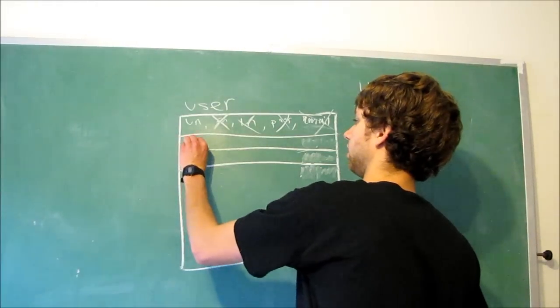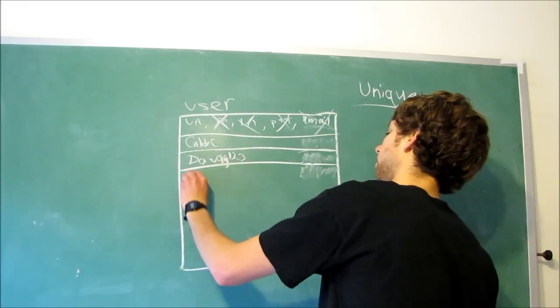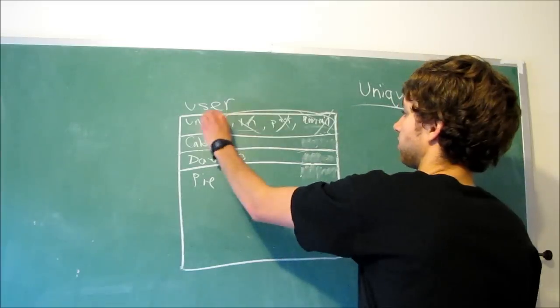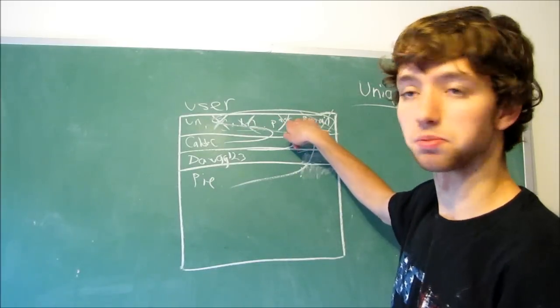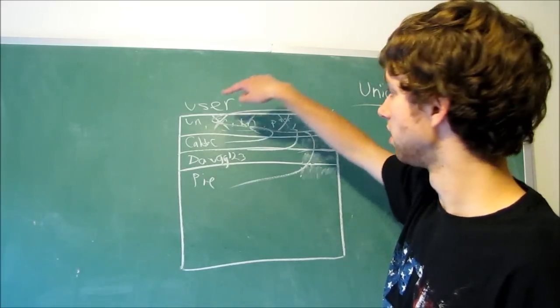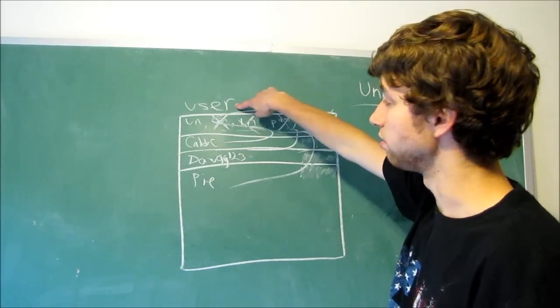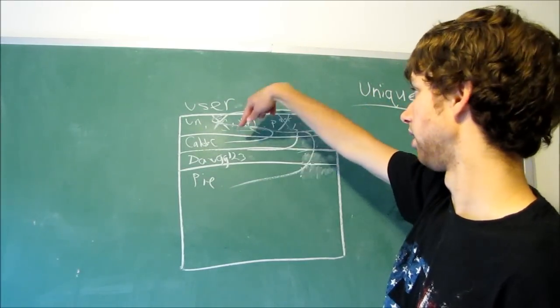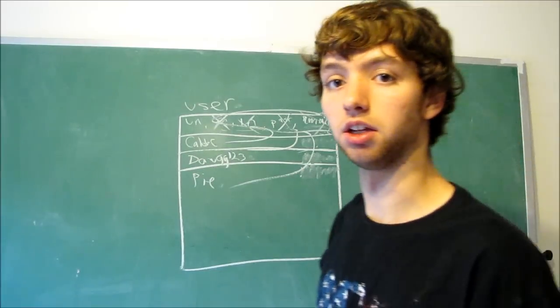Because we could have the username CalebC, and then we could have Dog123, and then Pi. These are three different people. All the other stuff, first name, last name, password, email, they point to that key. So we have a first name, and a last name, a password, and an email for the user with the username CalebC. That's how the key works. We have a first name, last name, password, and email for the person with the username Dog123. And then we have a first name, last name, password, and email for the user with the username Pi. That's kind of how the key works.